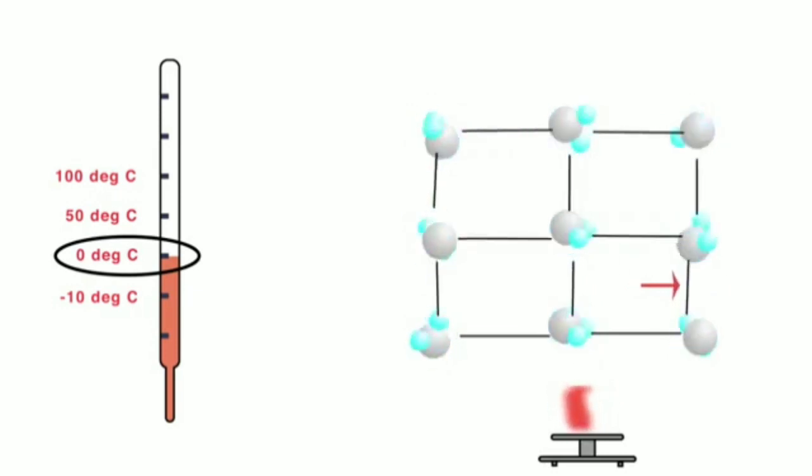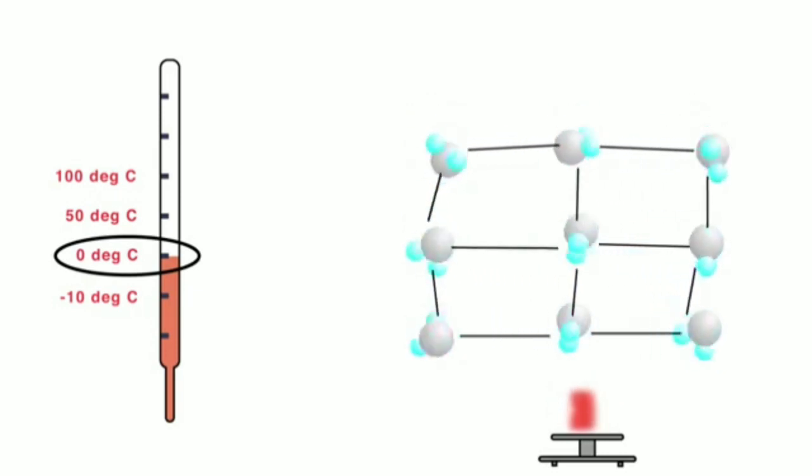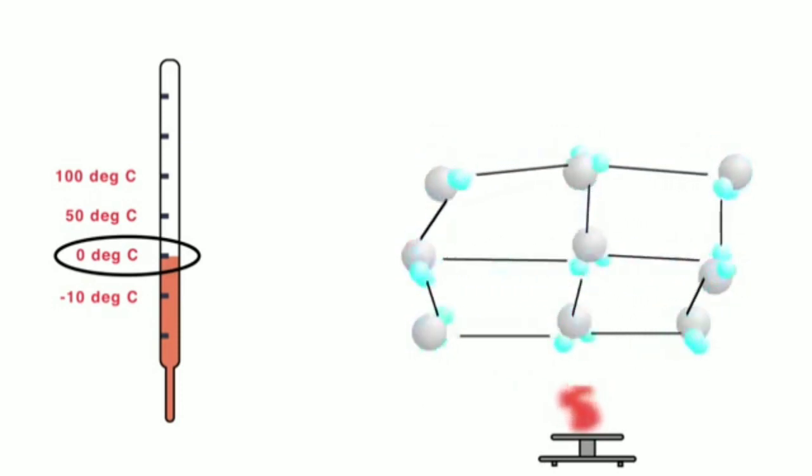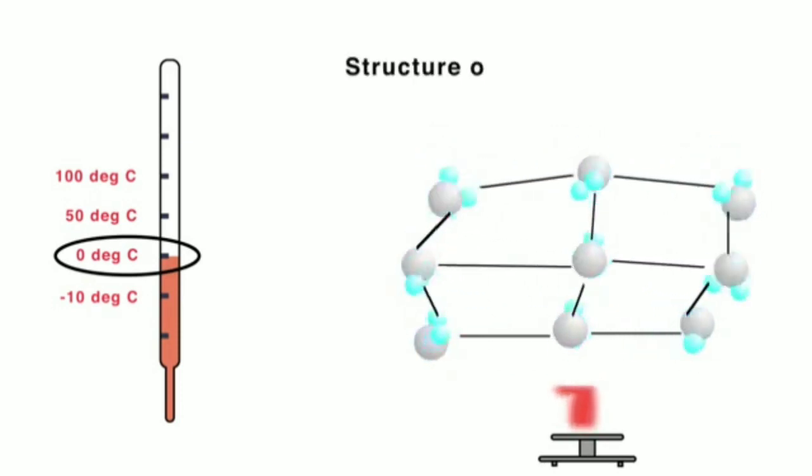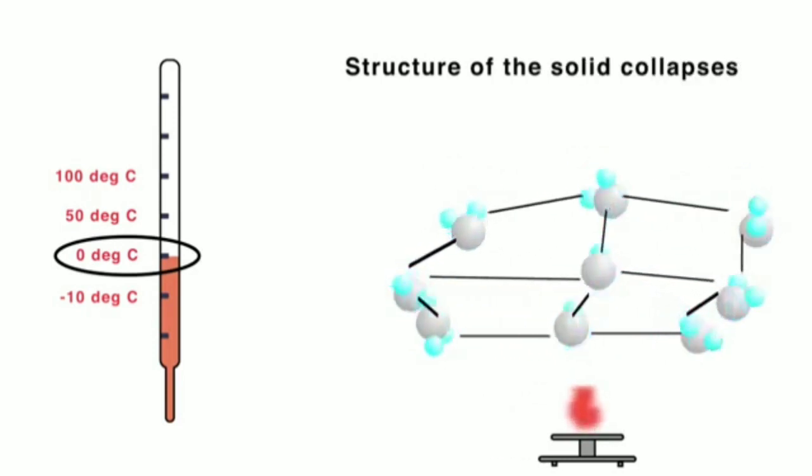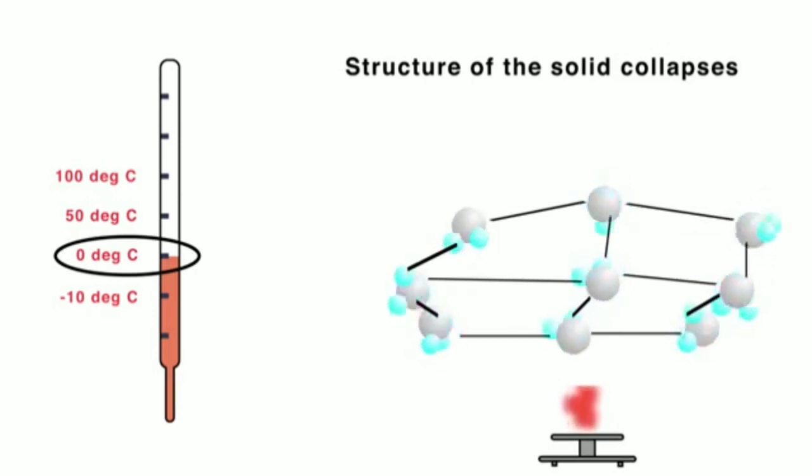Since all the heat energy supplied by the burner is utilized in weakening the particle forces, the structure of the solid collapses and cannot hold its shape. This leads to conversion of a solid into liquid.